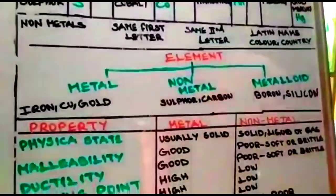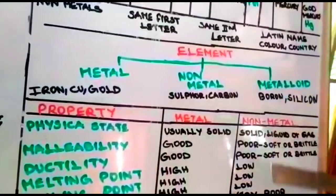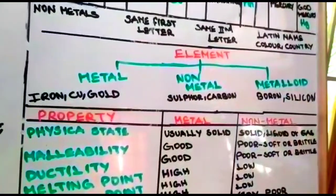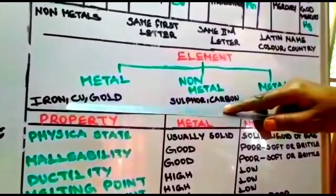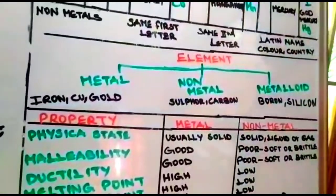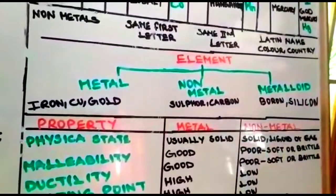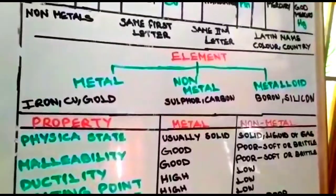Elements are further classified into three different types: metals, non-metals, and metalloids. Metal examples we use in daily life are iron, gold, copper. Non-metals include sulfur and carbon. Metalloids include boron and silicon.